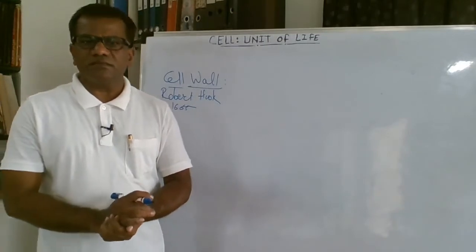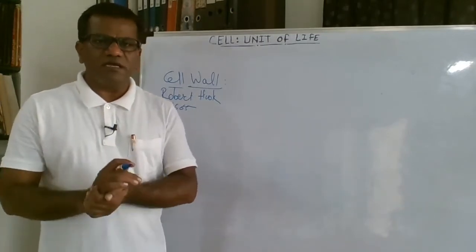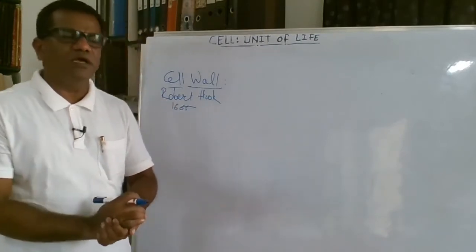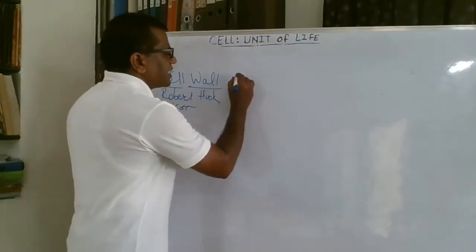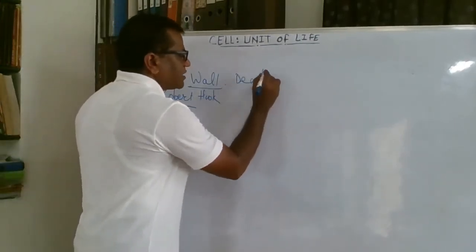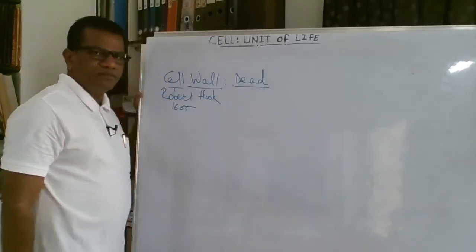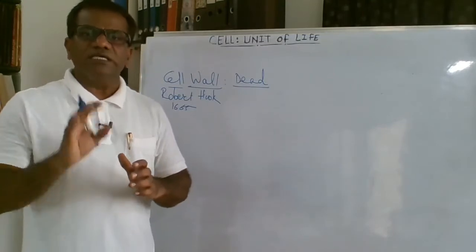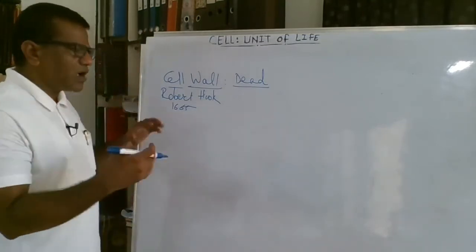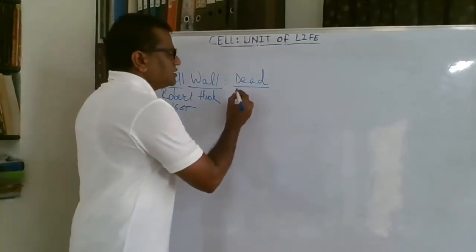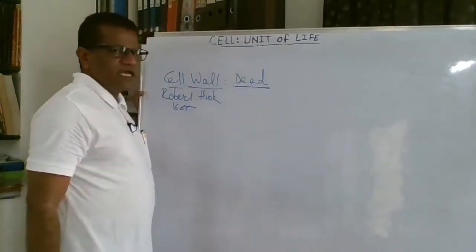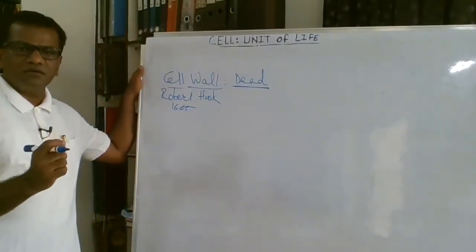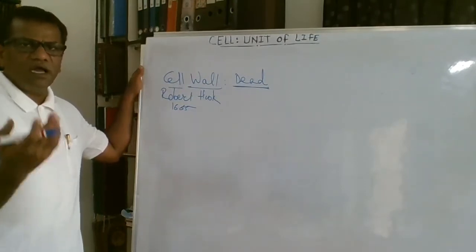In 1665, Robert Hooke was observing cork pieces under a microscope designed by himself, and he observed for the first time the empty cell walls of cork pieces. The cell wall is the boundary of the cell — it delimits the cell and gives a rigid structure and shape. The cell wall is a dead covering of the cell.